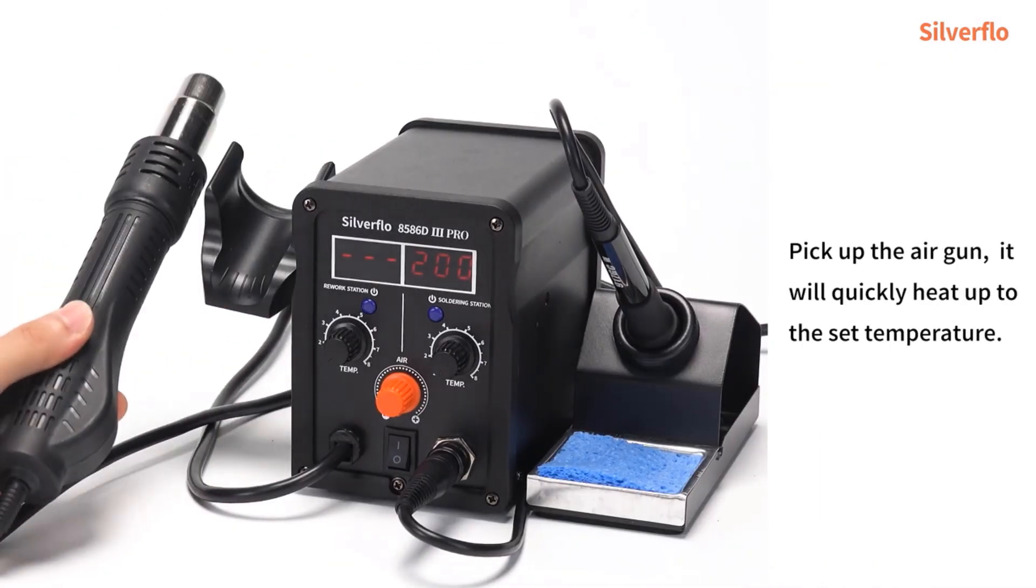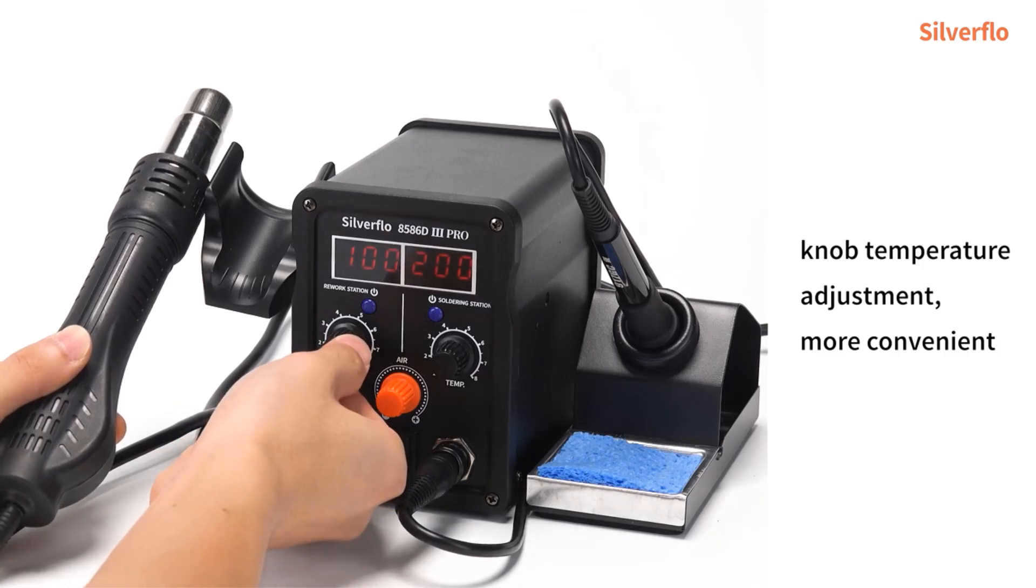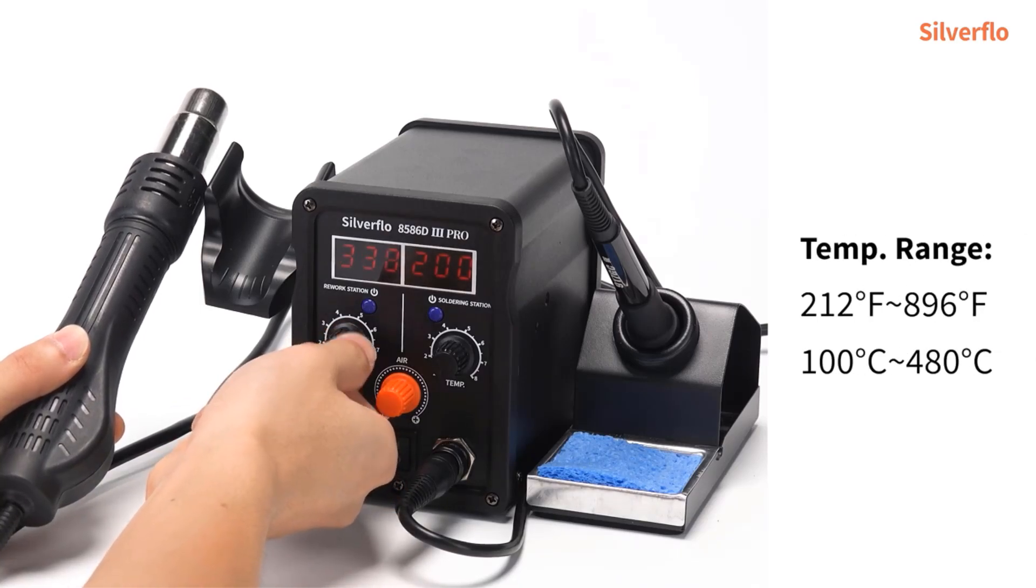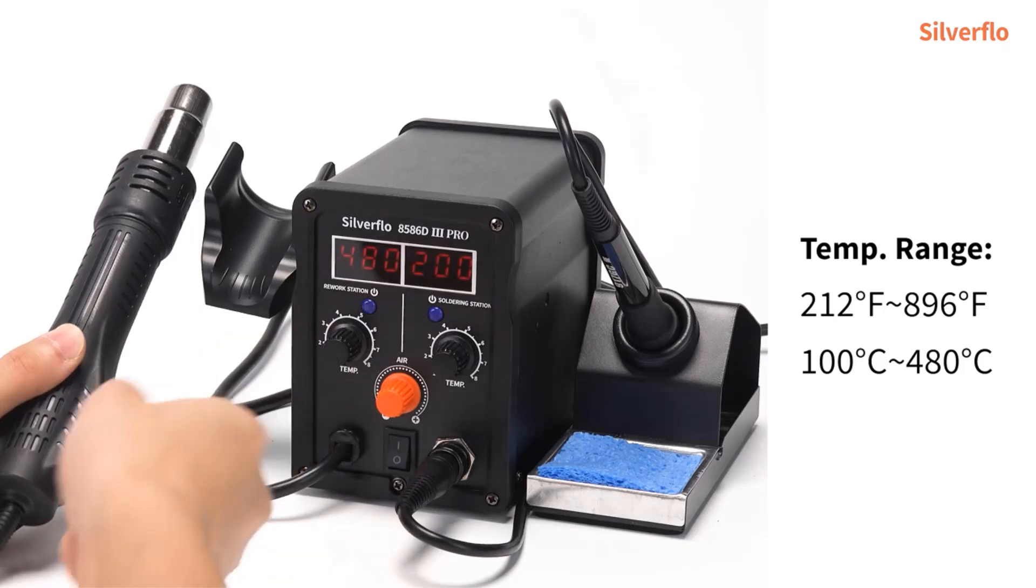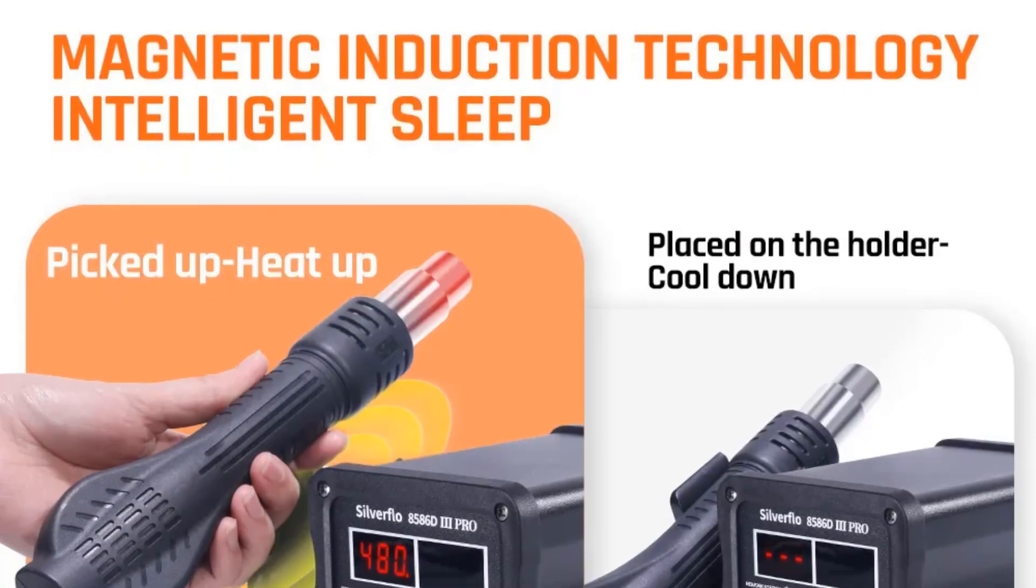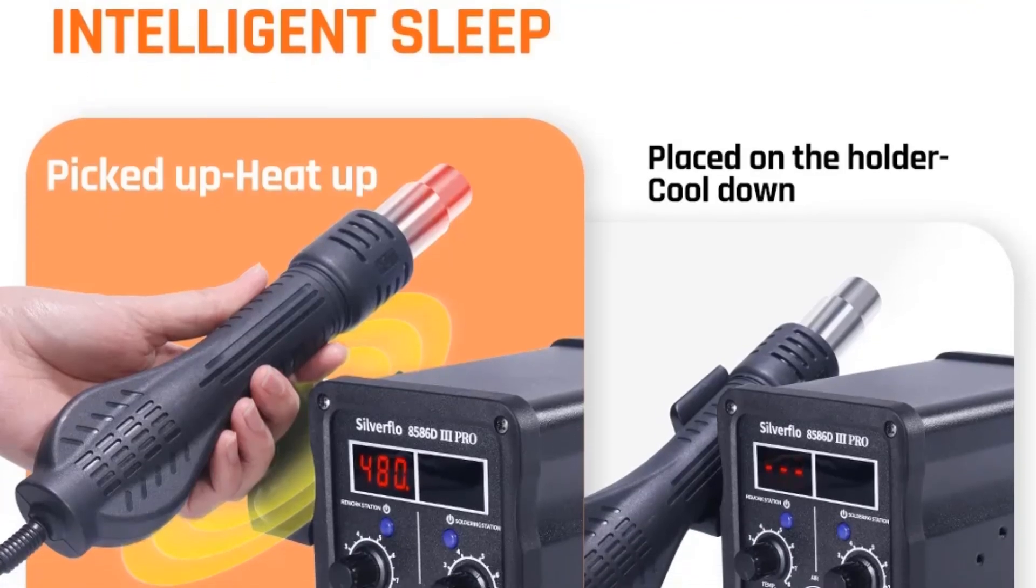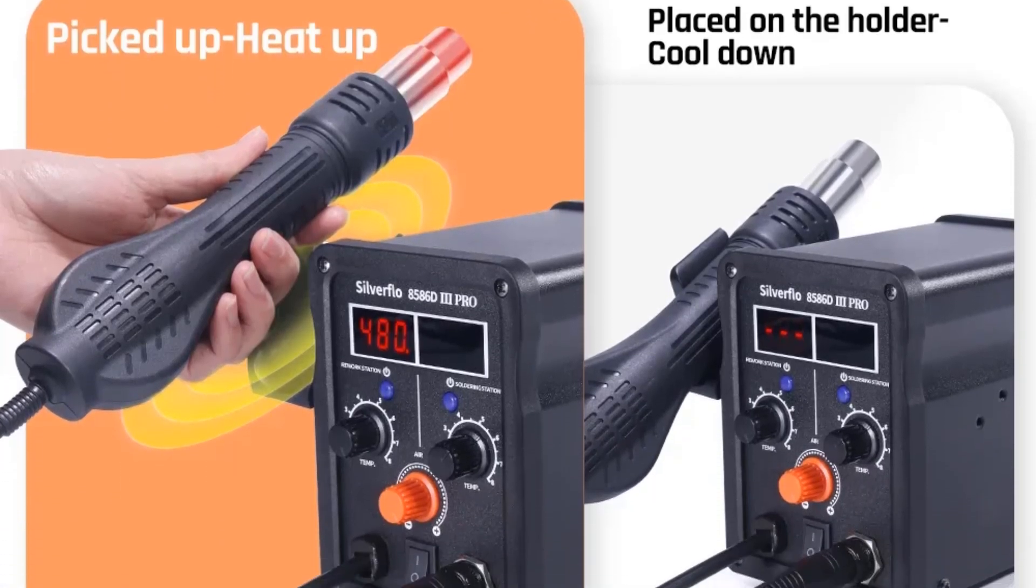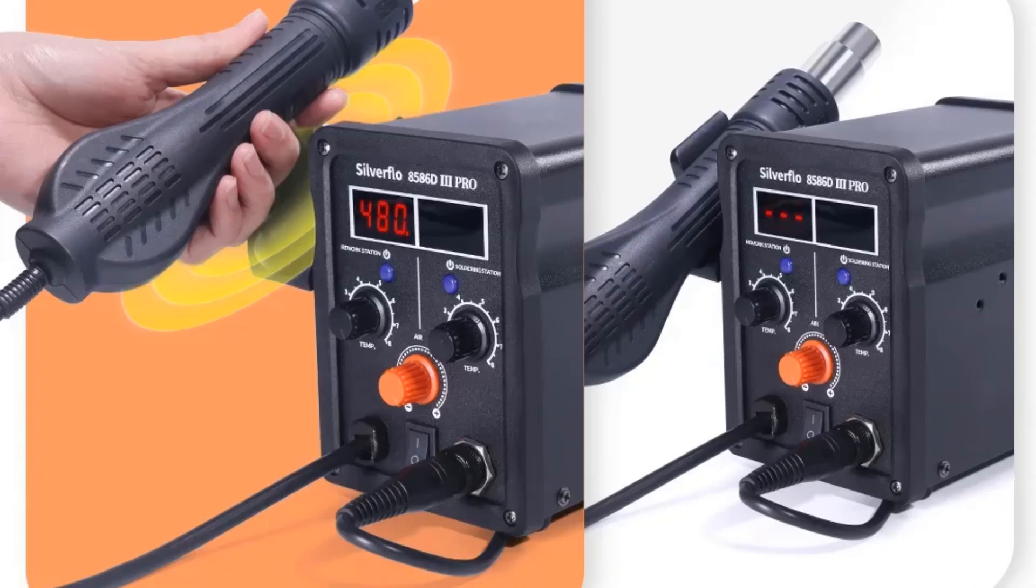It features precise temperature control, with a hot-air rework station operating between 100°C and 480°C, and a 75W soldering iron capable of heating from 200°C to 480°C, ensuring efficient handling of various soldering tasks, including BGA rework.